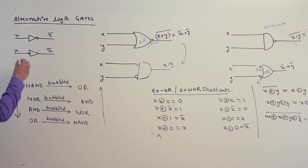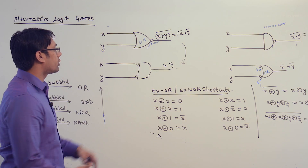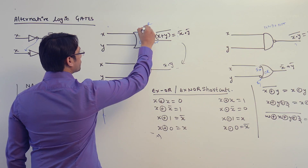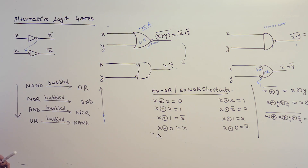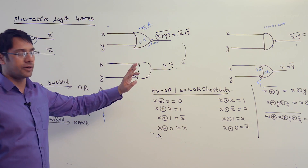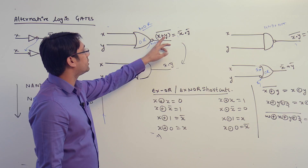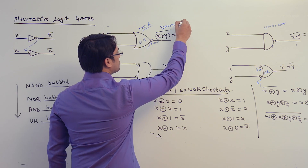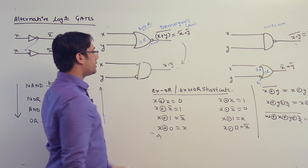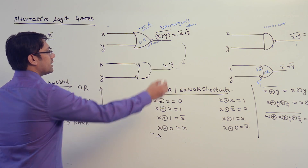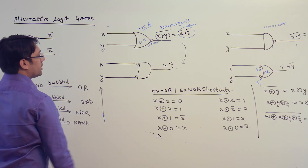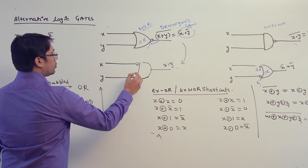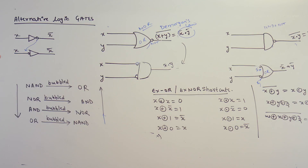Even if you shift the bubble, it still represents a NOT gate. Now, if you have an OR gate, we are going to use an OR gate and then use NOT after the OR gate. So x plus y whole complement represents a NOR gate. If you apply De Morgan's law on this, you can get x complement dot y complement. This same function can also be represented by an AND gate, but in the AND gate you are going to use two NOT gates — two bubbles — to represent the same function.